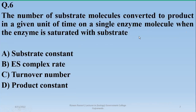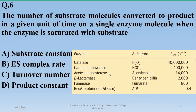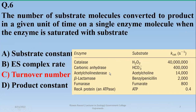Number six: the number of substrate molecules converted to product in a given unit of time by a single enzyme molecule, when the enzyme is saturated with substrate, is the turnover number of enzymes. The turnover number varies for different enzymes for a single enzyme molecule under saturation conditions.